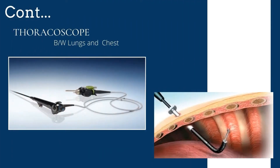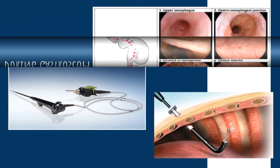The thoracoscope — the procedure is known as thoracoscopy or pleuroscopy. It is specially designed for the area of the space between the lungs and chest wall. It is inserted through an incision into the chest cavity. This covers the basic types of endoscopes and their usages.